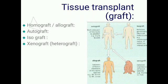The first variety is homograft, also known as allograft, where tissue is grafted from one person to another person of the same species. The second variety is autograft, that is grafting tissue from one part of an individual to another part of the same individual.